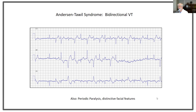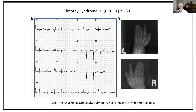Other characteristic phenotypic features of Anderson-Tawil syndrome present in this young lady's family include periodic paralysis of skeletal muscle, which can be quite severe and debilitating, and very distinctive facial features. Timothy syndrome — so-called LQT type 8 — is fortunately rare, but the mortality rate is very high even with aggressive treatment. These patients have a very long corrected QT interval, severe hypoglycemia at birth, syndactyly, sometimes pulmonary hypertension, and developmental delay.